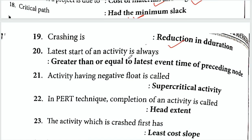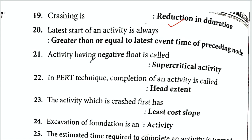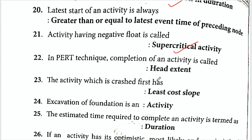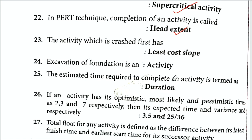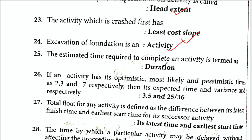The latest start of an activity is always greater than or equal to the latest event time of the preceding node. An activity having negative float is supercritical. The estimated time required to complete an activity is termed its duration.